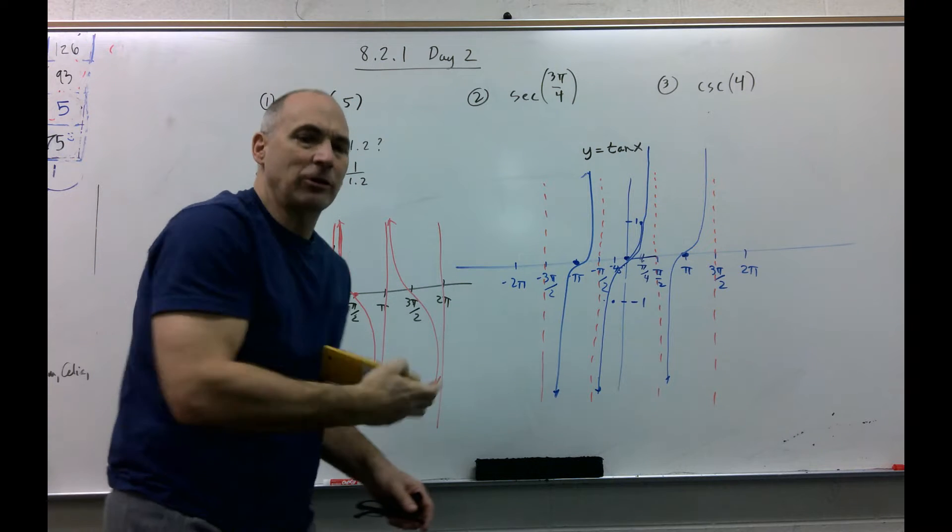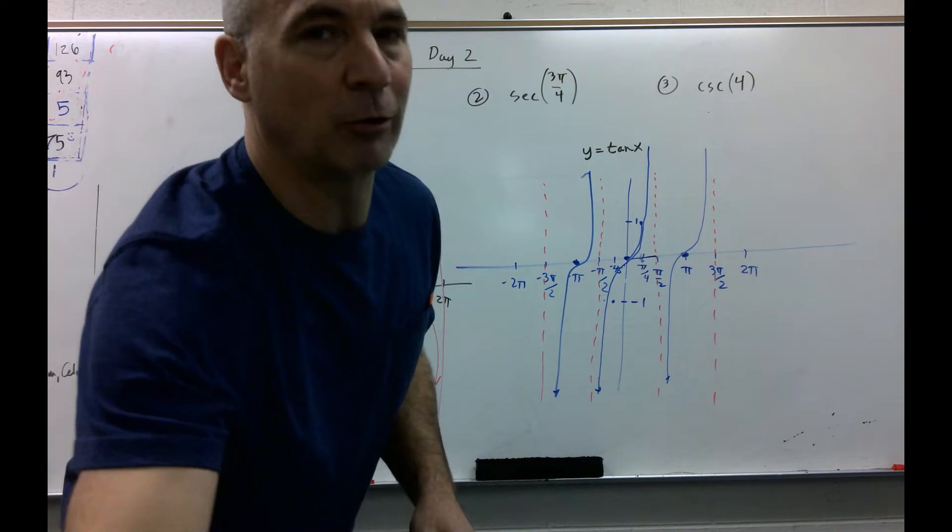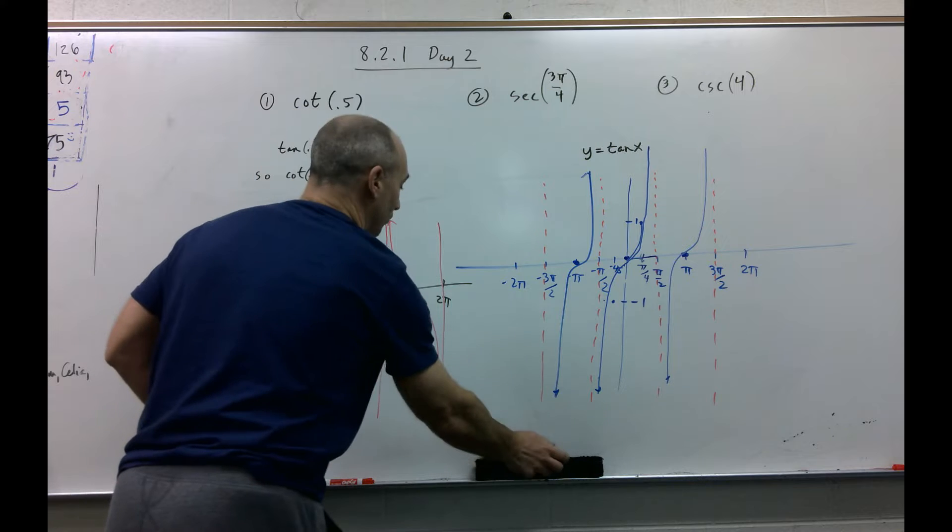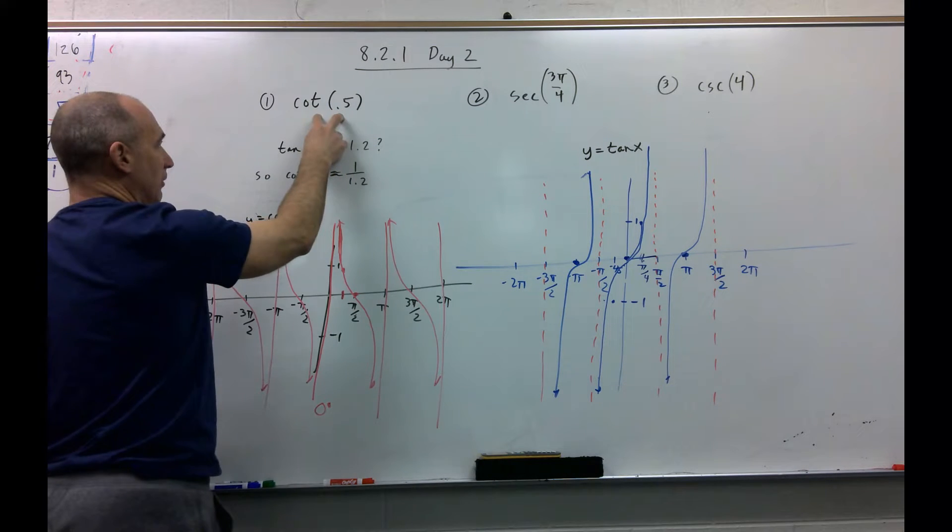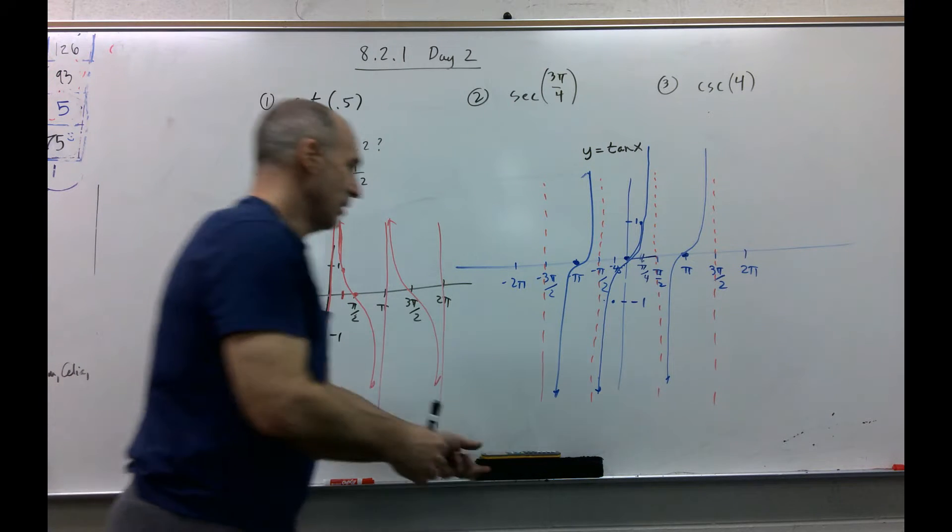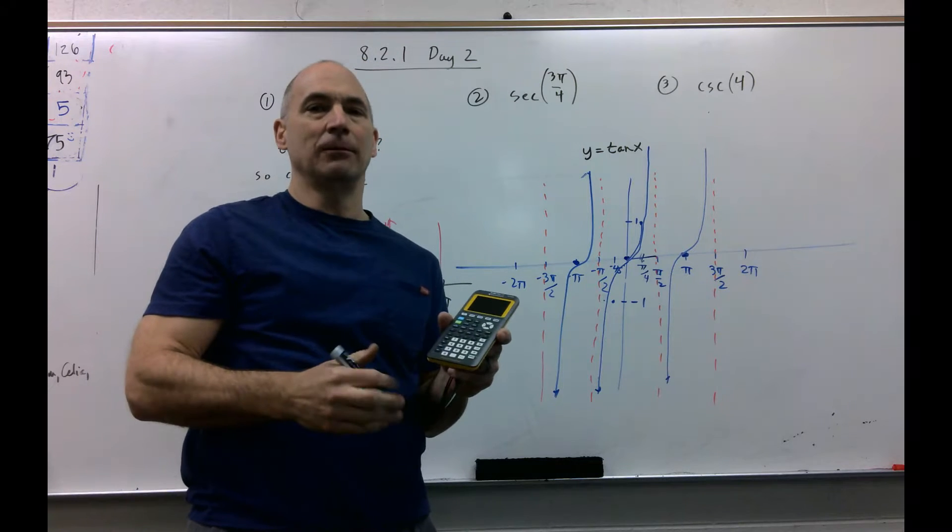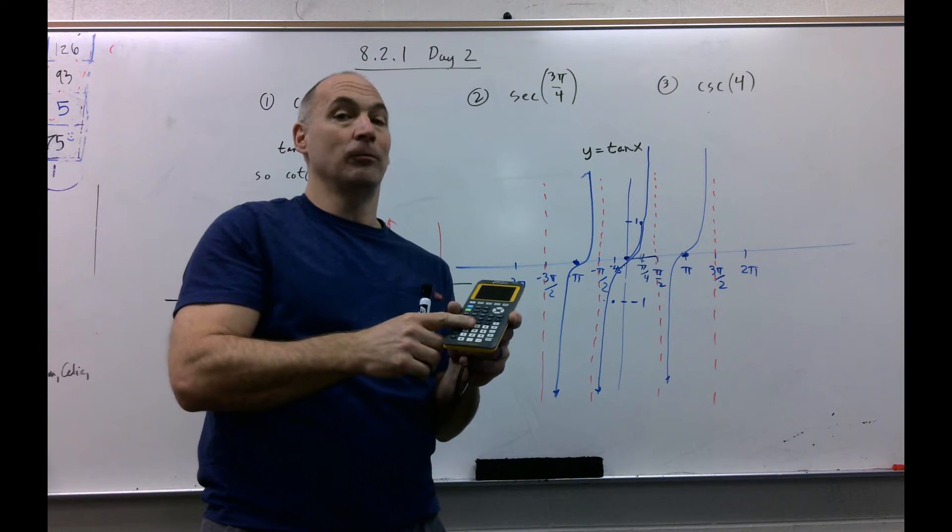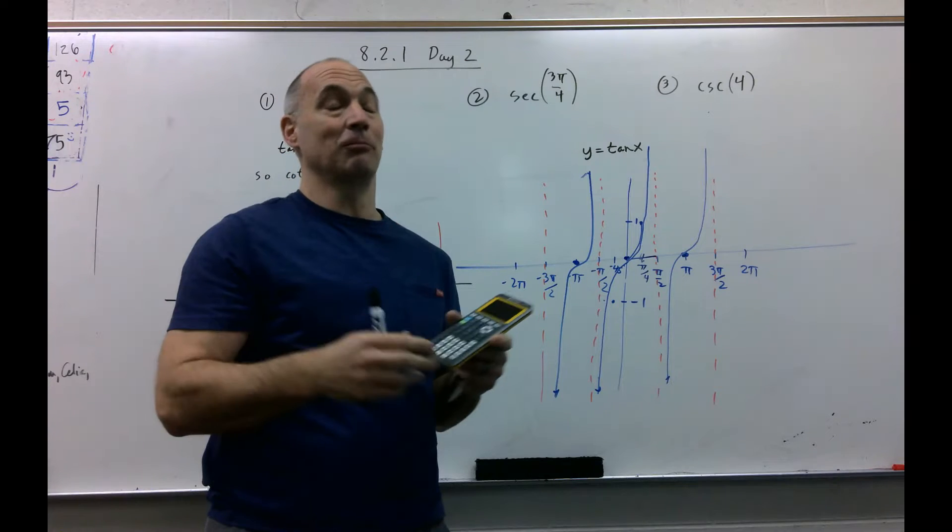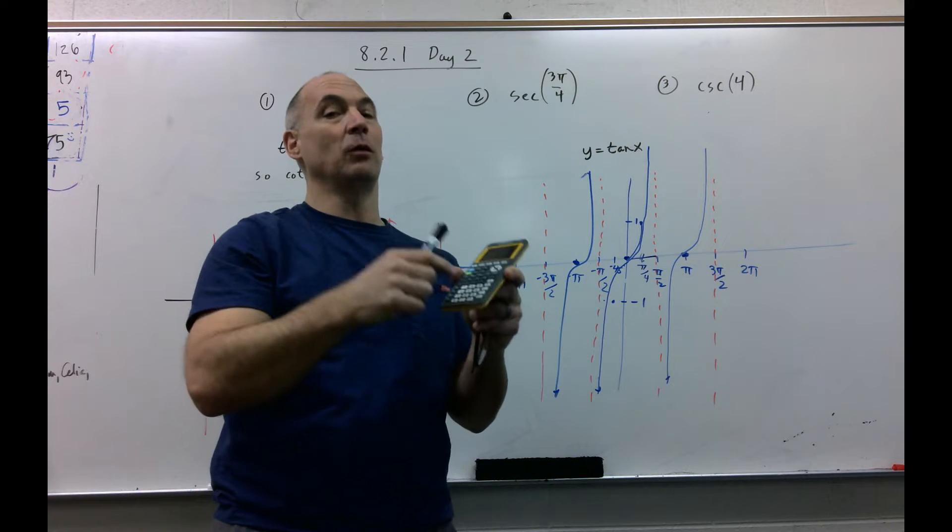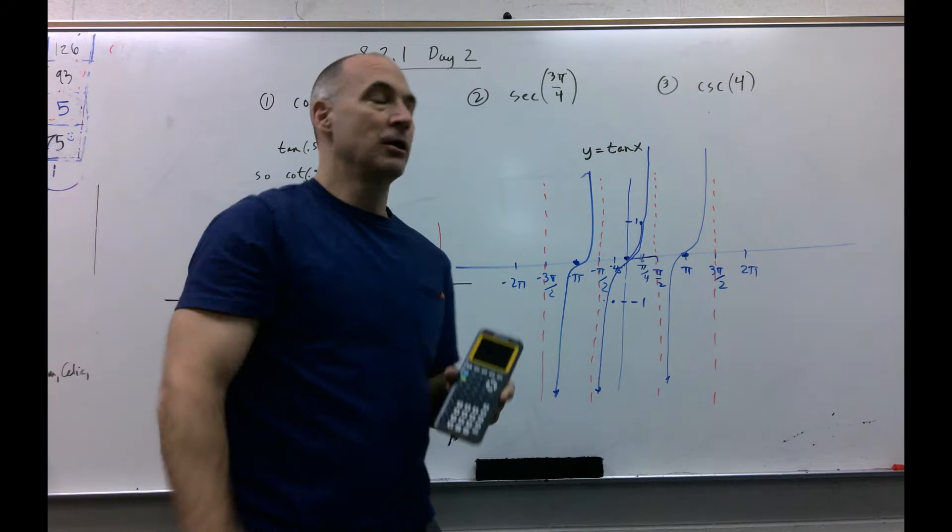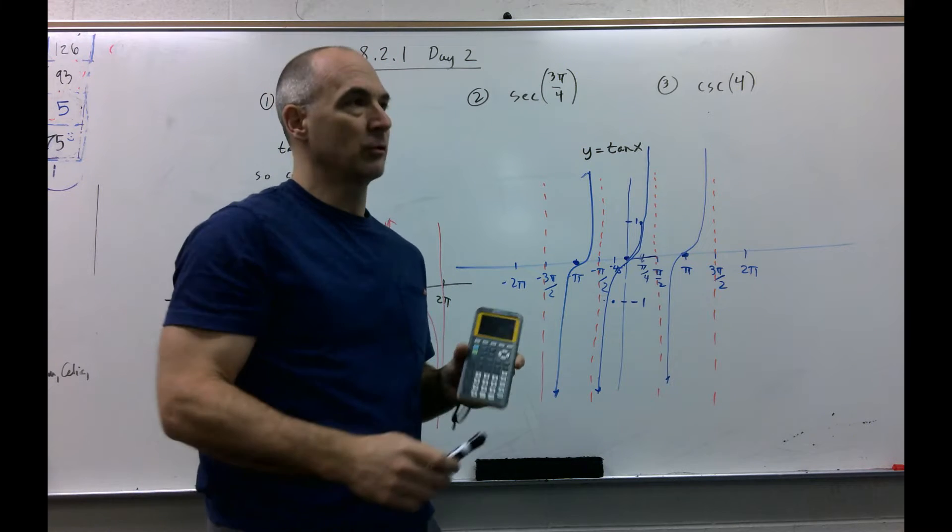How could you even think to use the graph to help yourself solve a problem like this? Well, I know your phones have cotangent on it. I know these don't. So why? I don't know. You can send people to the moon, but we won't put cotangent on here, or cosecant, or secant.